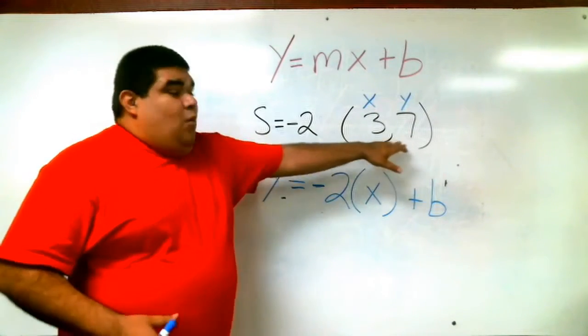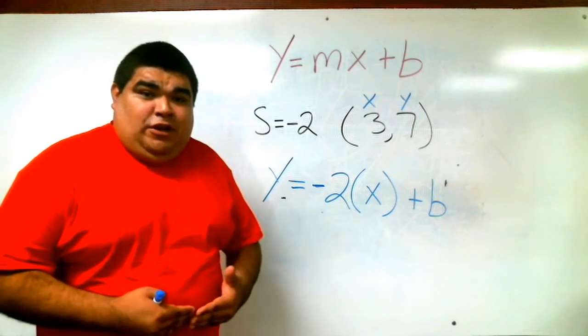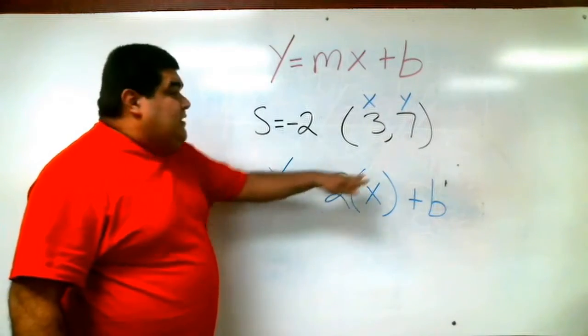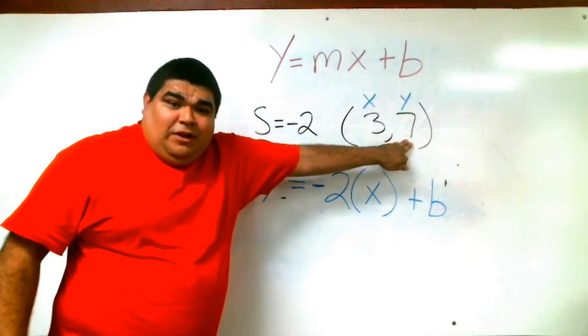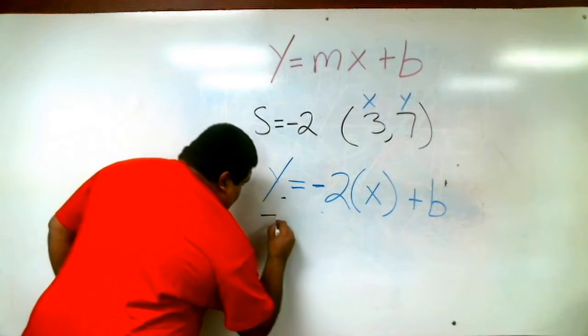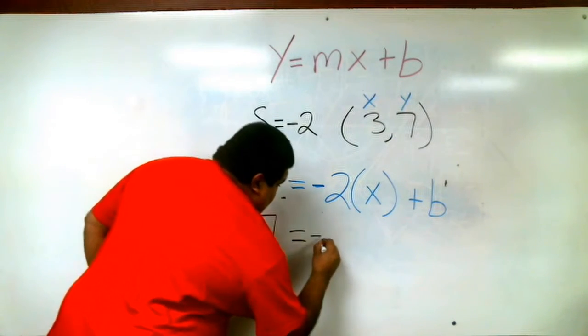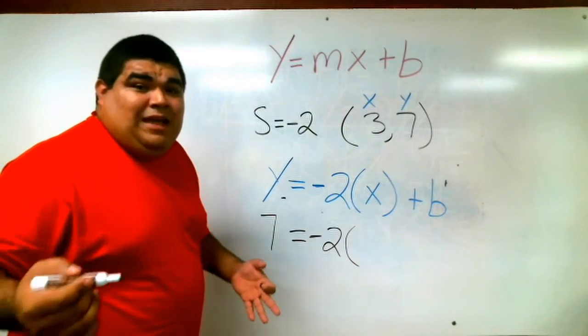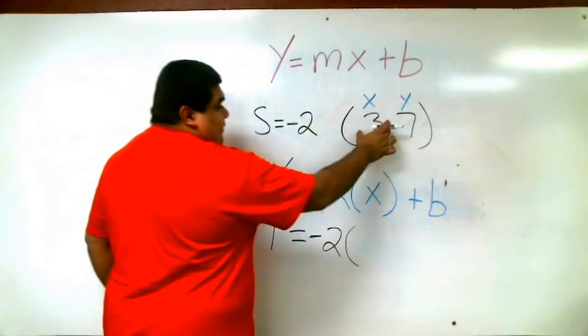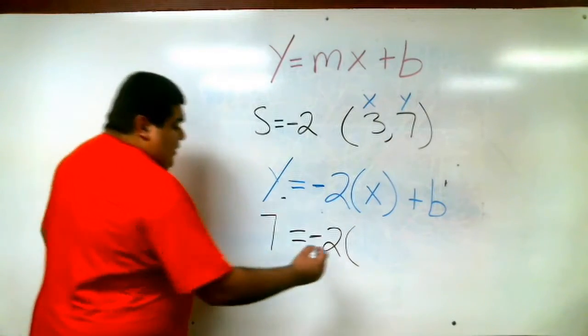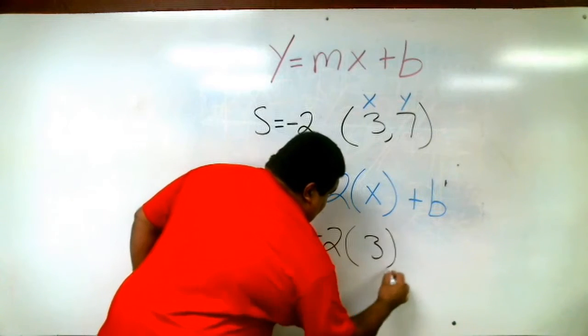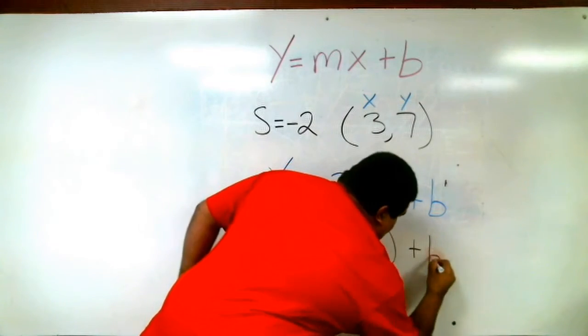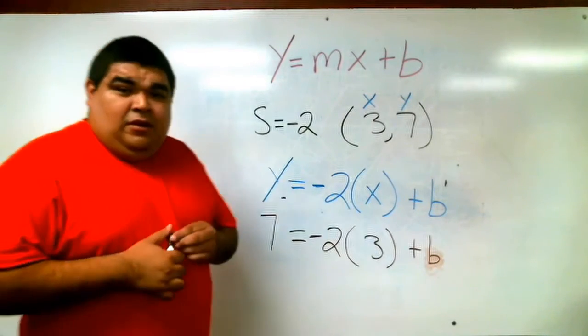Now that we have x and y, we can actually plug it in also to the equation. We know that y is 7 now, because we labeled the y as 7. So we can say 7 equals negative 2, parentheses. We also have an x already, because we labeled it on the coordinate, which is 3. So we have 3 plus b.